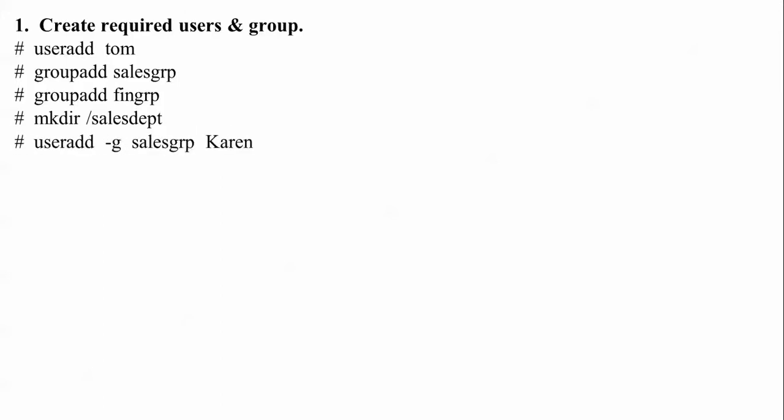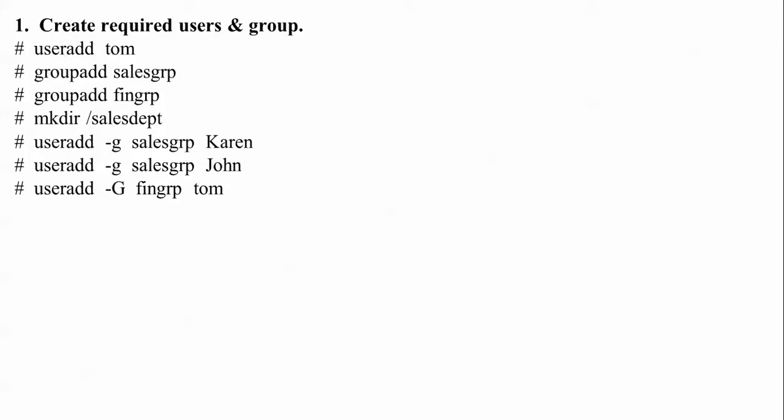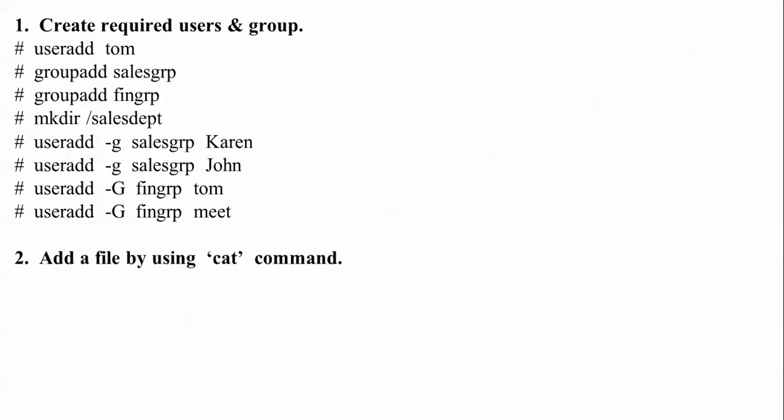I'm going to add this group to the username. A new user will be created and added to the sales group. Then I'll add the 'fing' group under username 'tom'. I'll add two users into the sales group and one user into the fing group. There will be four users total — two users added into the sales group and two users added into the fing group.